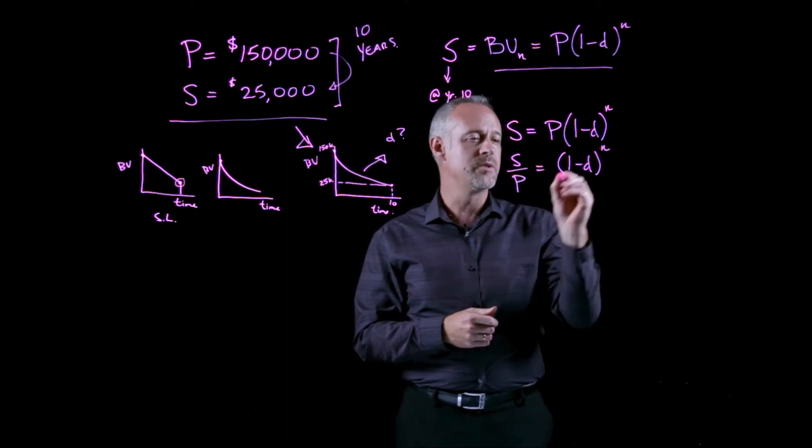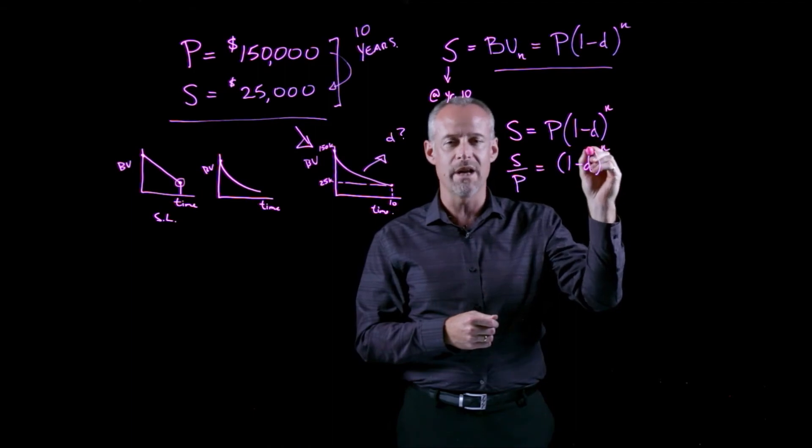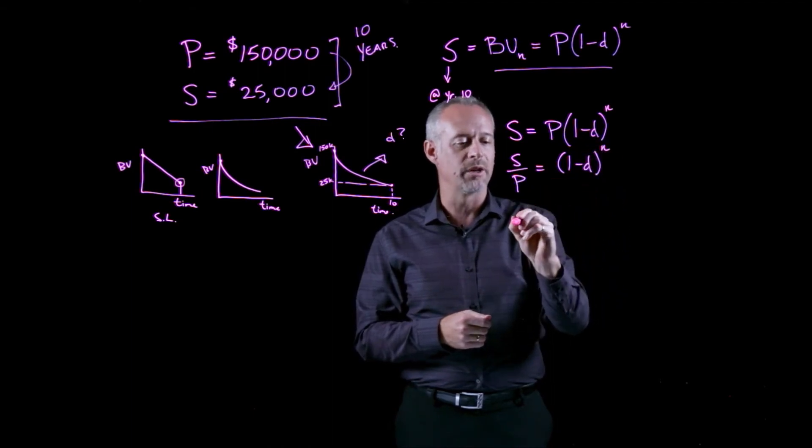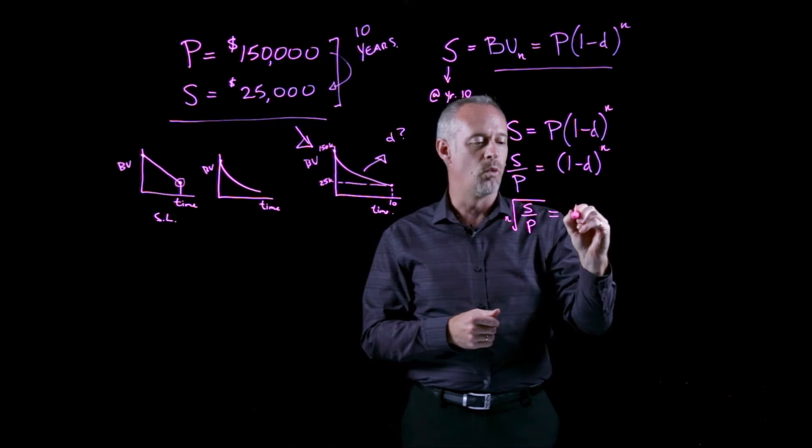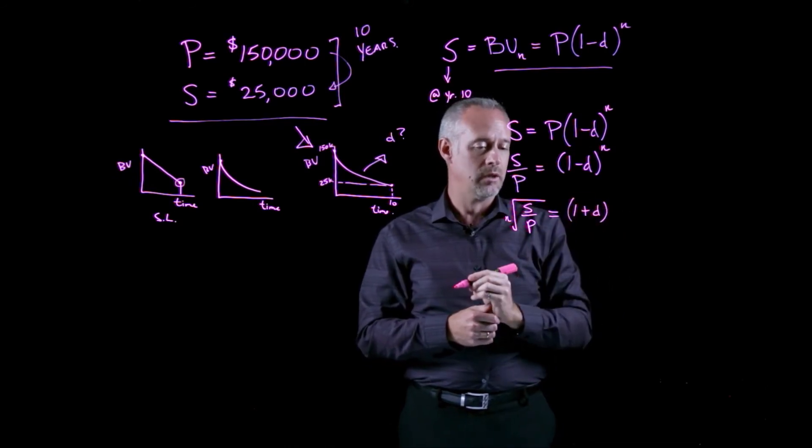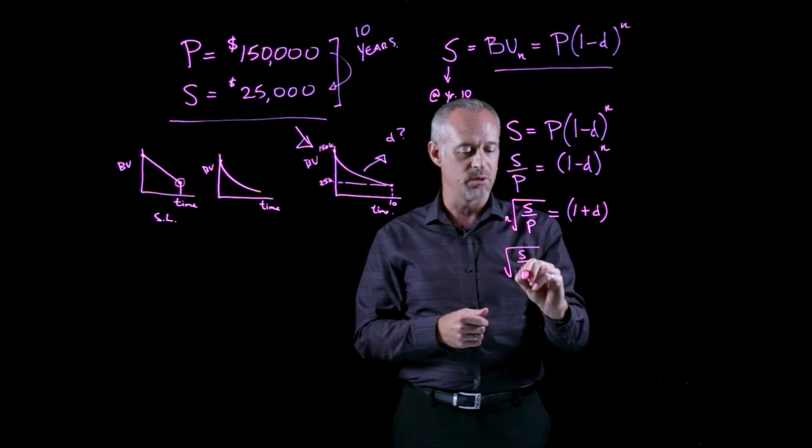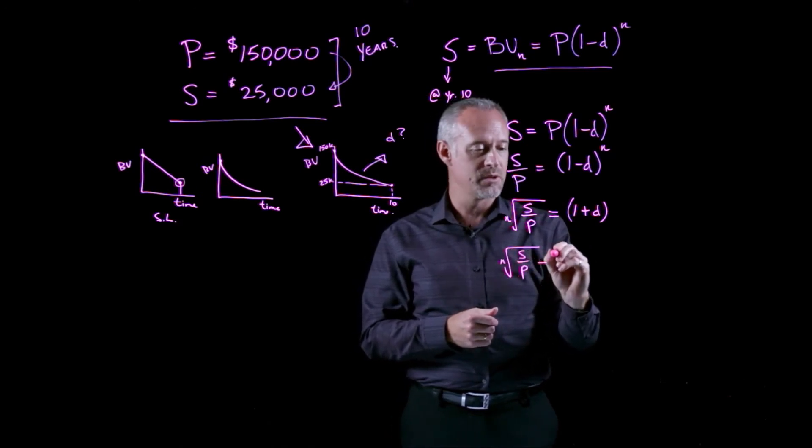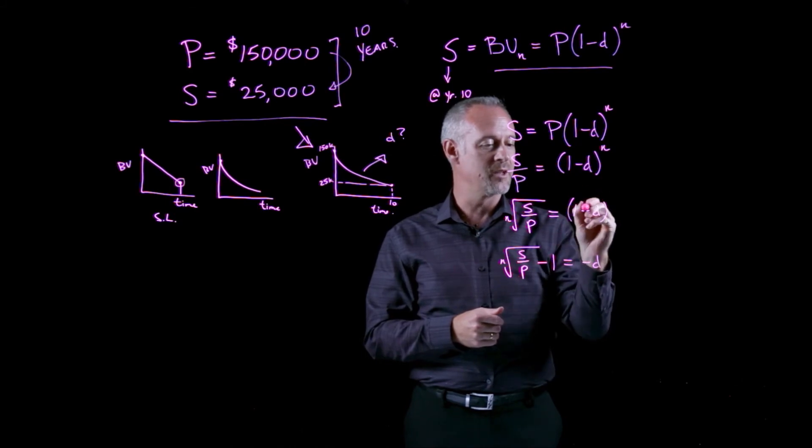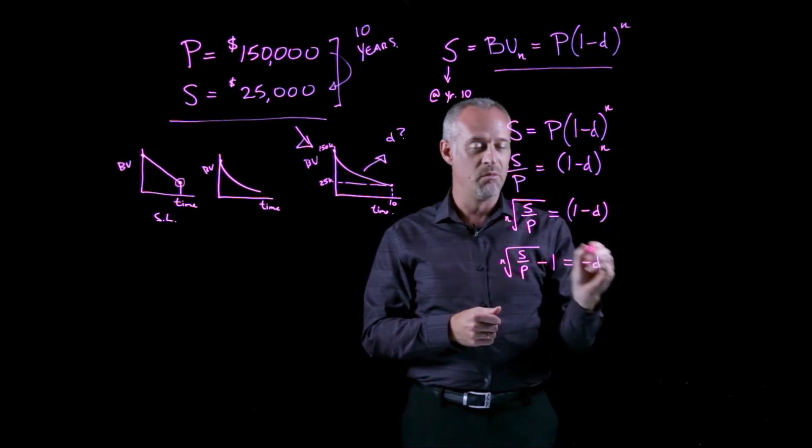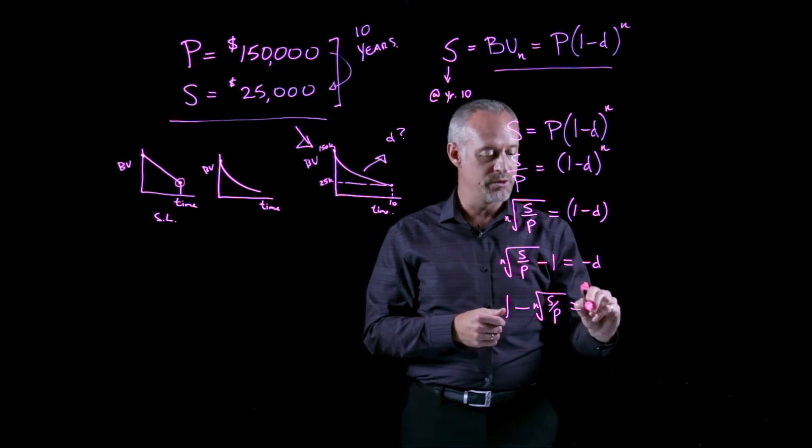Trying to solve for d, the easiest way to isolate this term is to raise both sides to the power of 1 over n or the nth root. I could write it like this, s over p to the nth root is equal to 1 plus d. I'm getting close. So now if I bring the 1 to the other side of the equation, I have s over p to the n minus 1 equals, sorry, it should be minus d. That is 1 minus d. And then multiplying through by minus 1, I have 1 minus the nth root of s over p is equal to d.